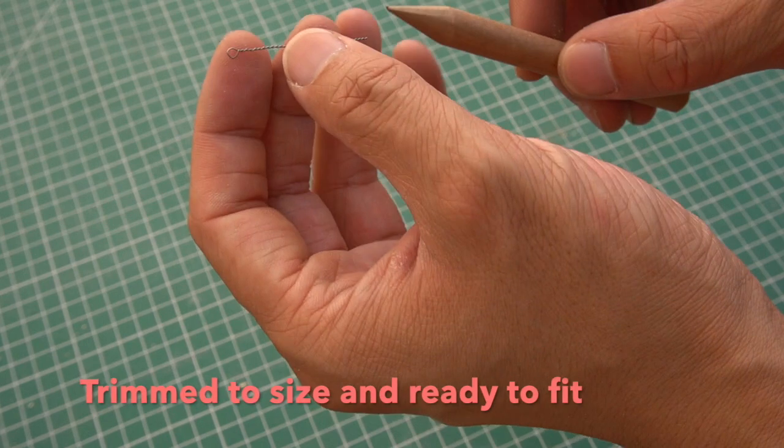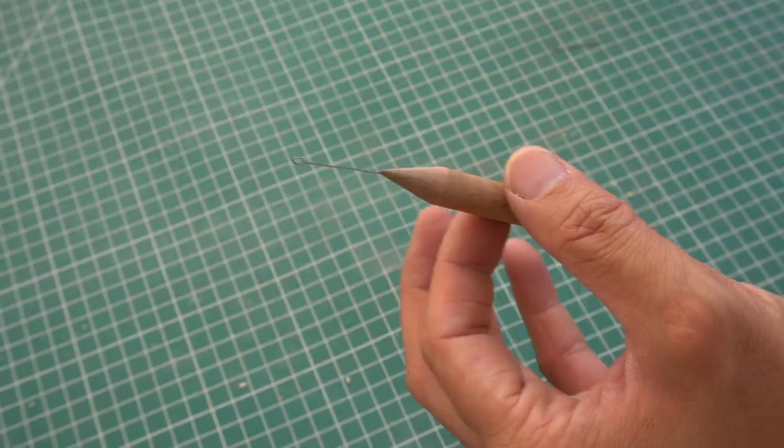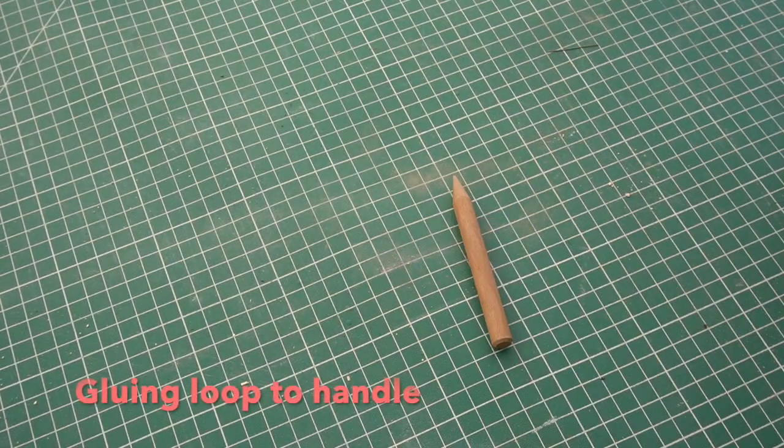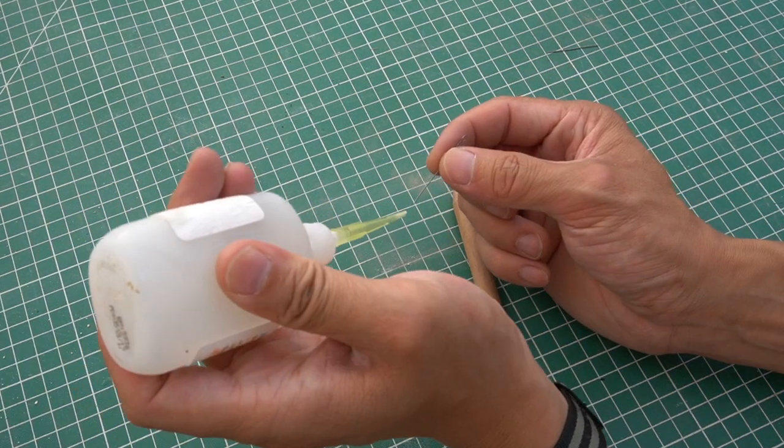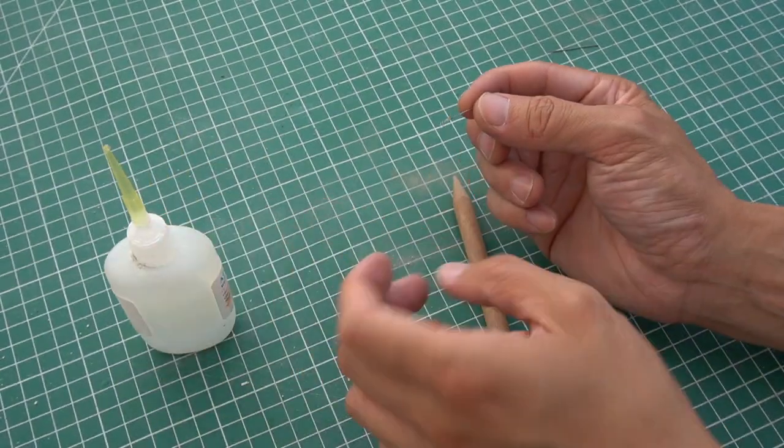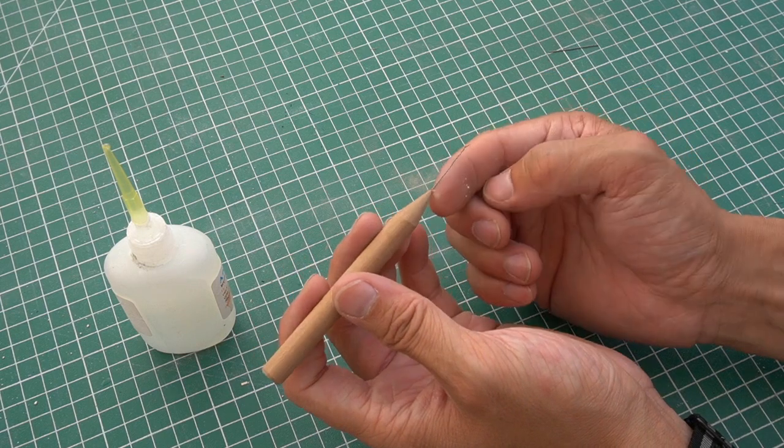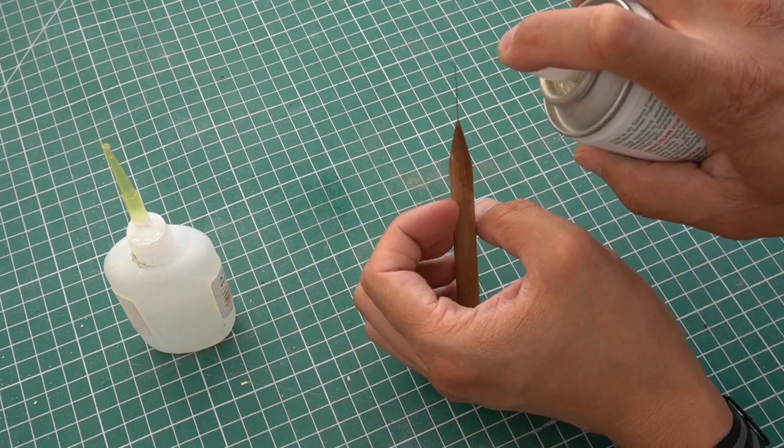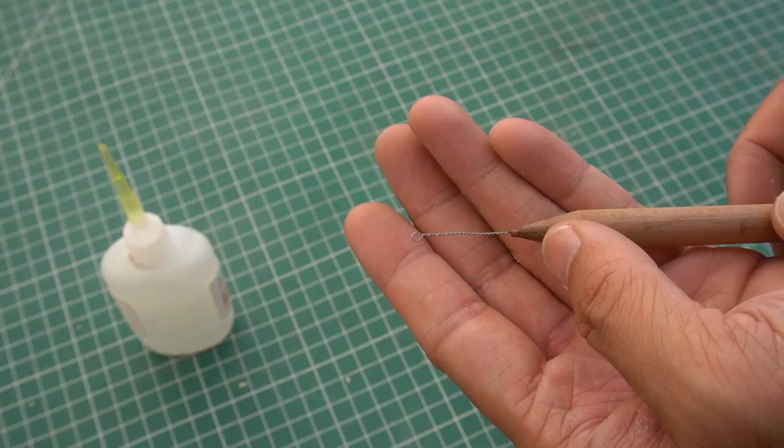Test fit it with the handle—looks pretty good. Then we apply some thick superglue so that it can fill the gap between the handle and the loop. To help it dry a bit quicker, we're going to shoot some activator and it looks pretty good from here.